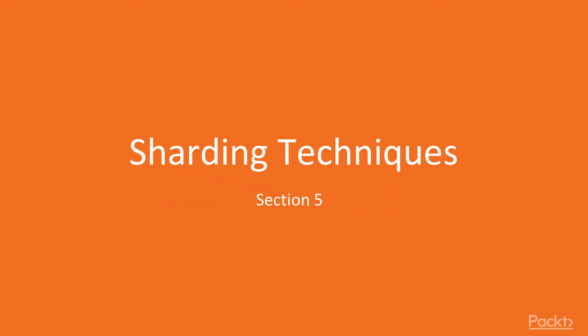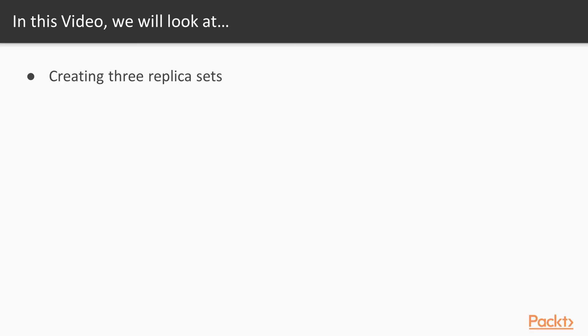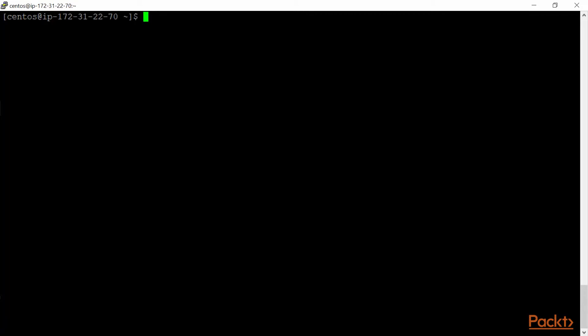Hi guys, welcome back. In this section we'll be having a practical approach at implementing the sharded cluster. The plan is simple: we'll be creating three sharded clusters wherein every shard will be a replica set having three members — one primary and two secondaries. In this video we'll set up the replica sets by creating nine different servers and configuring them into three different replica sets.